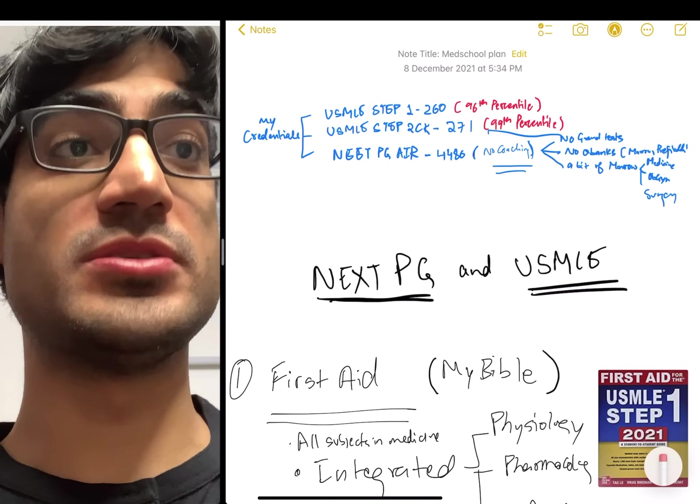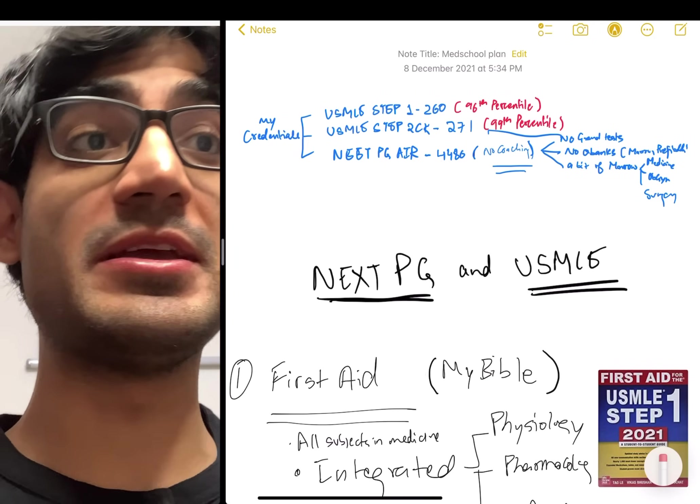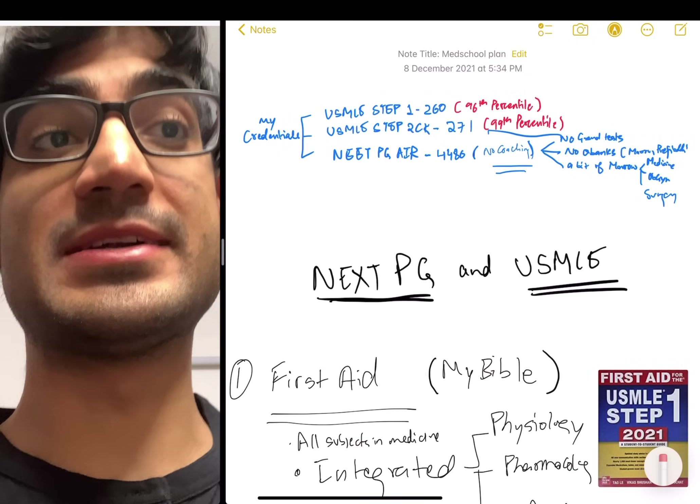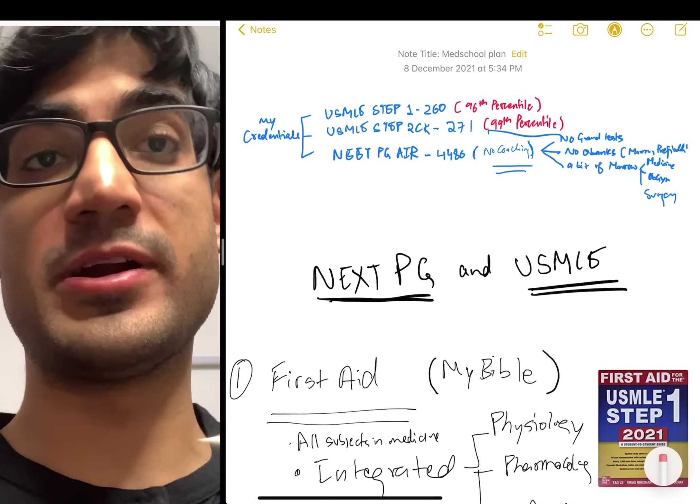So what are my credentials? Well, I have a step one score of 260, step two CK score of 271. So this puts me in the 99th percentile. I also have a NEET PG rank of 4,480 without any coaching.